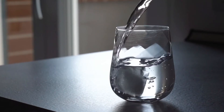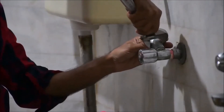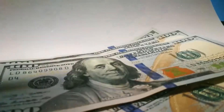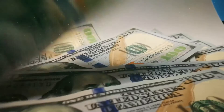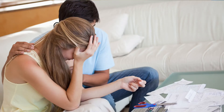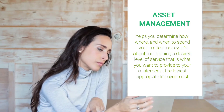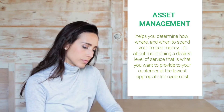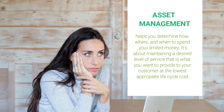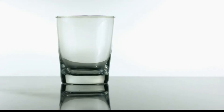Your drinking water system is made up of many assets, from pipes and pumps to meters and tanks. It costs money to construct, install, operate, maintain, repair, remove, and replace these assets — a lot of money. Most likely you don't have all the money you need to do everything that should be done within your water system, so you should make smart choices about where you spend the money you do have available. Asset management can help with making smart decisions — it helps you determine how, where, and when to spend your limited money. It's about maintaining a desired level of service at the lowest appropriate life cycle cost. Life cycle cost means total cost of ownership of an asset.